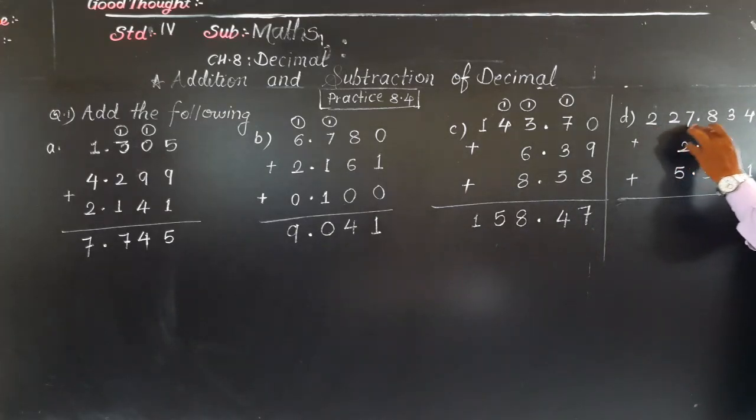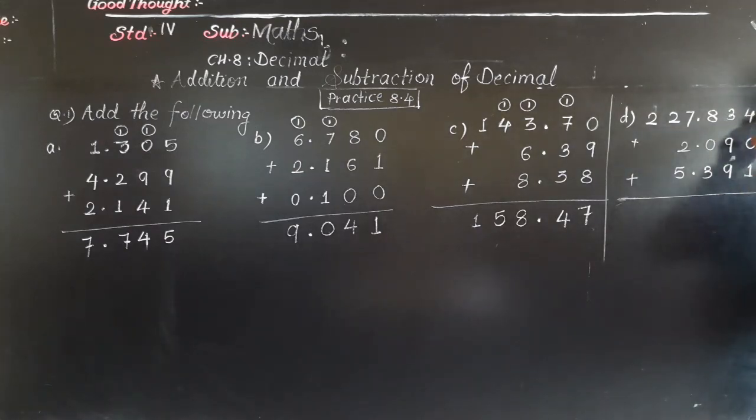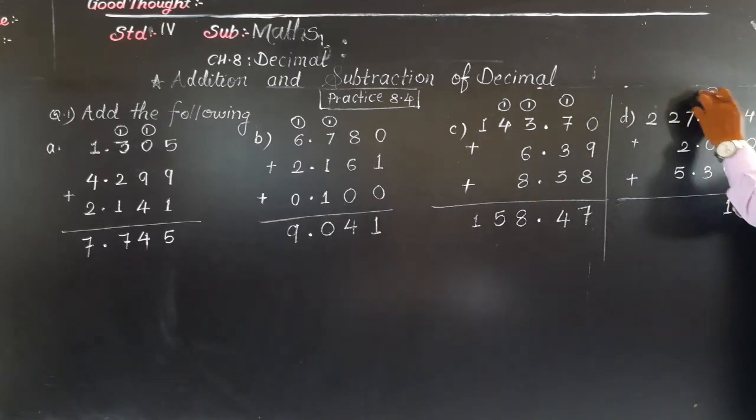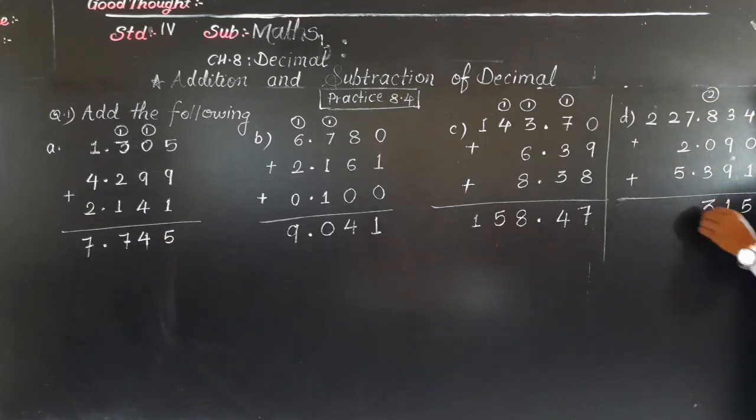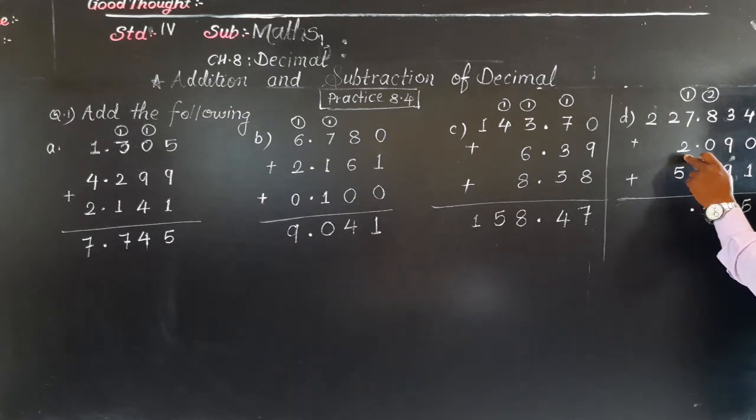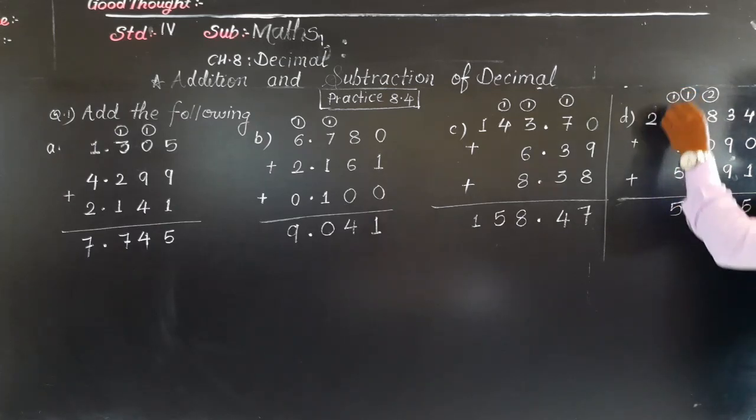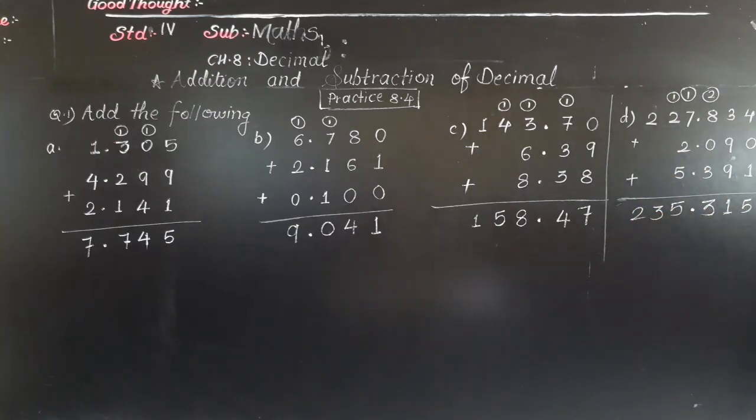See next: 227.834 plus 2.09 plus 5.391. So here, in the first decimal and in the last decimal there are 3 decimal places, here there are only 2. So let's put 1 zero here at the end. Now add: 4 plus 1 is 5, 5 plus 0 is 5. 9 plus 9 - 9 twos are 18, correct? 18 plus 3 is 21. 1 will come down, 2 will be carried. 8 plus 2 is 10, correct? 10 and 3 is 13, plus 0 is 13 itself. So 3 will come down, 1 will be carried. Now here put decimal point. 7 plus 2 is 9, 9 plus 1 is 10, 10 and 5 is 15. 5 will come down, 1 will be carried. 2 plus 1 is 3 - I mean here 2. 235.315. Understand?